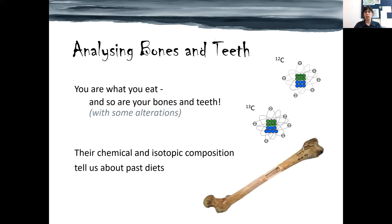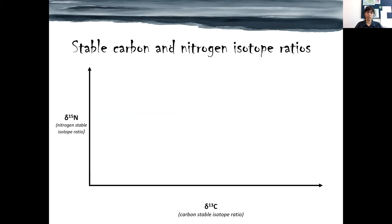We've all heard that you are what you eat, so your skeleton reflects what you've eaten with some iterations. We can make use of this by analyzing bones and teeth to find out about past diets. The most common way in archaeology to do this — Katerina already mentioned it — is using carbon and nitrogen stable isotope ratios. They're typically displayed with carbon stable isotope ratios on the horizontal axis and nitrogen on the other one.